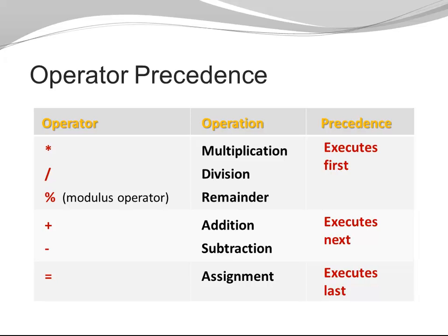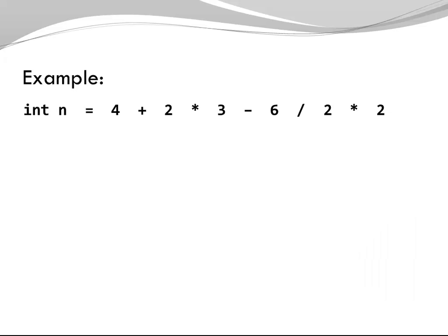Times, divided, modulus are executed first. Plus, minus are executed next, and then, at the very end, the assignment operator is executed. If there are multiple operators of the same precedence group, we're going to execute them left to right. So let's have a look at an example.